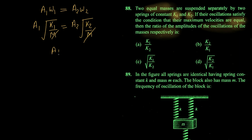So a1 upon a2 equals under root k2 by k1. Your answer is option D.